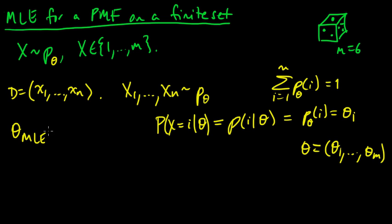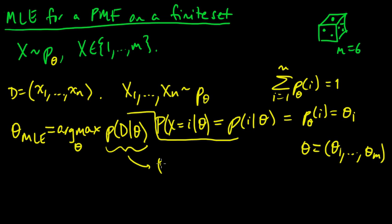So the MLE, the definition is it's the argmax over thetas of the probability of our data given theta. So this is the MLE, and this was our data here. And so this is the probability that x1 equals little x1, and so on, xn equals little xn, given under this distribution P sub theta.